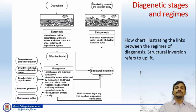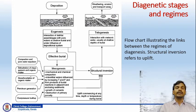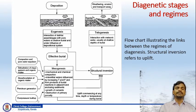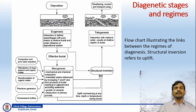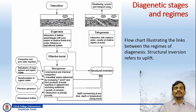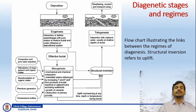In the mesogenetic regime, what happens is compaction and pore water expulsion, dehydration of clays, gypsum and organic matter, decarboxylation of organic matter, petroleum generation, and pore pressure buildup. This causes mechanical and chemical compaction, with interstitial waters influenced by increasing temperature and pressure from burial reactions in adjacent and enclosing sediments, growth of cements, and destruction of primary porosity — all resulting from mesogenesis or late diagenetic processes.